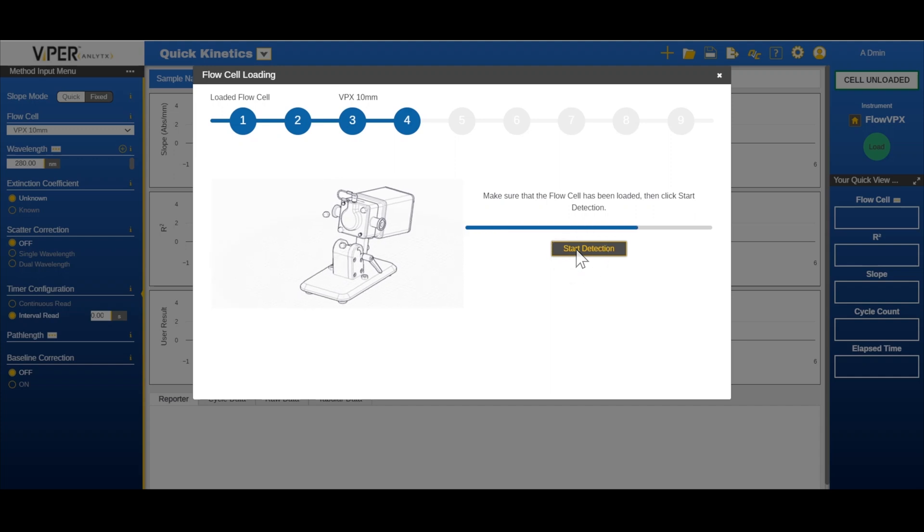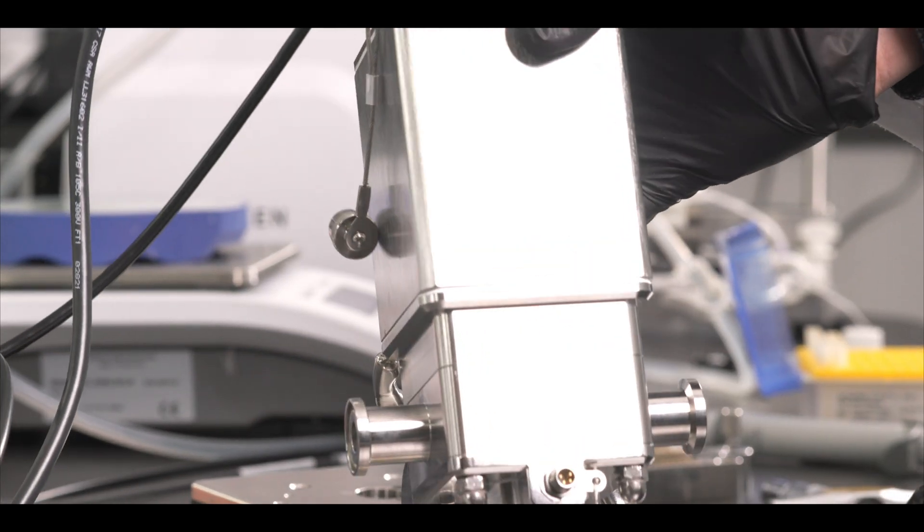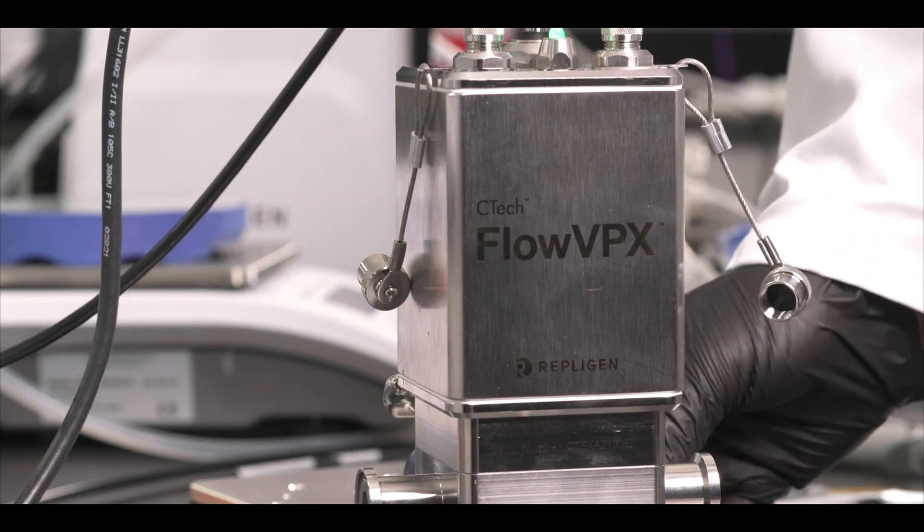In the software, click start detection. Wait for the software to detect the flow cell. Then click next step. Return the FlowVPX to the upright position. Tighten the mounting post clamp handle.